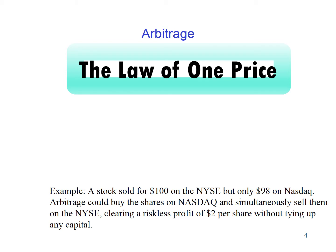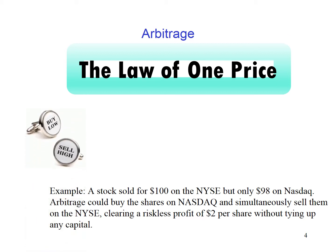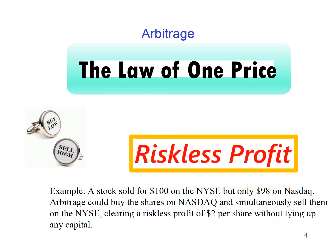The law of one price is enforced by arbitragers. They will take advantage of prices in disequilibrium. Arbitragers will buy the asset where it is cheap and sell where it is high. Through this arbitrage mechanism, price will move back to equilibrium. An arbitrage opportunity arises when an investor can earn riskless profits without making a net investment. Theoretically, by selling short, the investor can use the proceeds from the short sale to buy long, and therefore the transaction can be made without any investment. This makes the transaction a no-cost, riskless transaction.